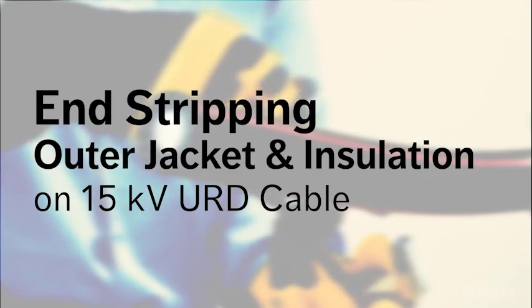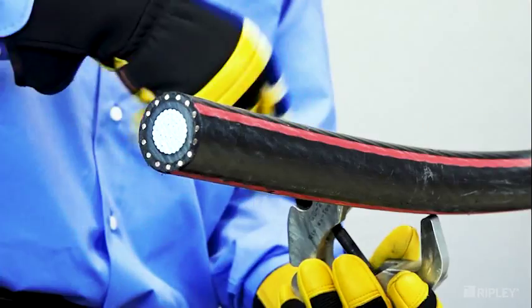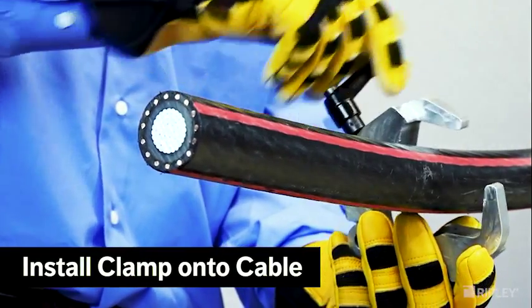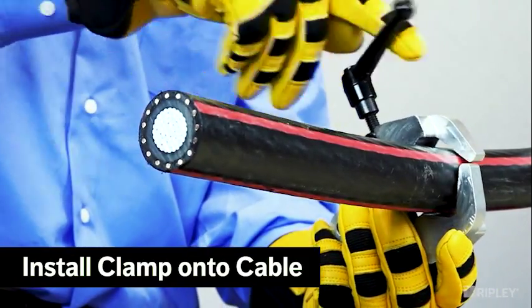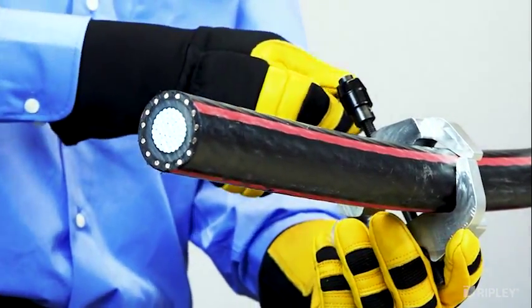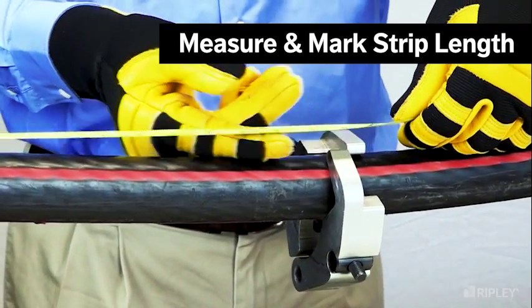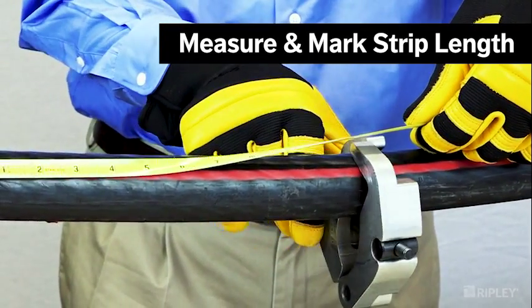To begin end stripping a medium voltage URD cable, place a clamp loosely around the cable for use as a strip stop. Measure and mark the desired strip length, then secure the clamp in place.